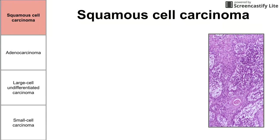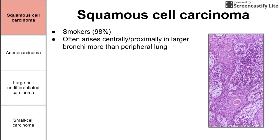Let's start with squamous cell carcinoma. This is a disease of smokers — 98% of squamous cell carcinoma instances happen in smokers. It often arises centrally in larger bronchi more than in the peripheral lung. So you're usually going to see this toward the bronchi, toward the middle of the lung, closer to the center. If you only see this on the outside, it likely is not squamous cell carcinoma.